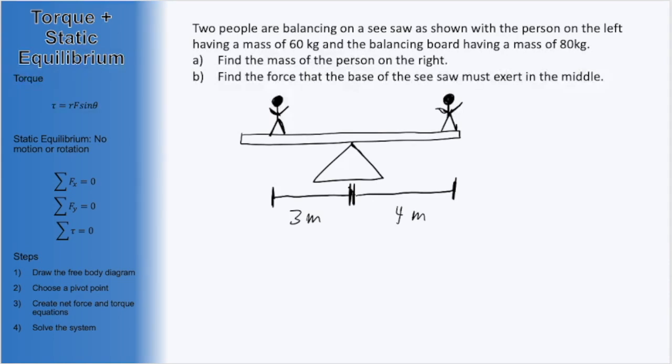Next, let's take a look at an equilibrium problem. Two people are balancing on a seesaw as shown, with the person on the left having a mass of 60 kilograms and the balance board having a mass of 80 kilograms. Part A asks, find the mass of the person on the right. So let's label some stuff here. We know that M2 is what we are looking for in part A. And the mass of the balance board, which I'll call capital M, is 80 kilograms. In this question, we are told that the people are balancing on this balance board, so everything is going to stay still as long as they remain still. This tells us that this is a static equilibrium problem.